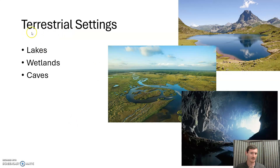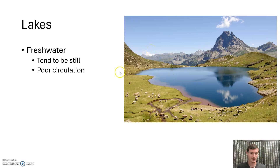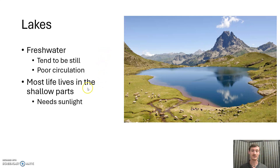Terrestrial setting — terra means earth — these are going to be aquatic settings that are on land or more on land than not. We've got lakes, wetlands, and caves. Starting with lakes, which hopefully we've all been to at one time or another. These tend to be fairly still, not a lot of circulation. We might remember that circulation is really important to keep oxygen levels high, so it is extremely common for life to just be in the shallow and top parts.